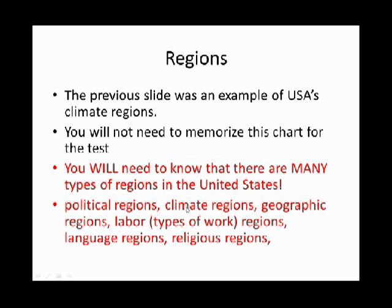These are the examples I'm going to give for different types of regions. There's political regions, climate regions, geographic regions, labor regions—labor is types of work—language regions, and religious regions. Now I'm going to give you an example of each one.